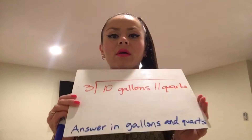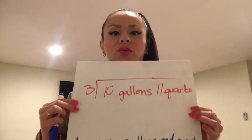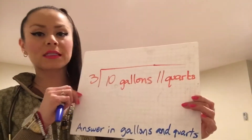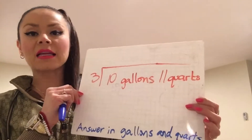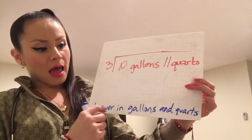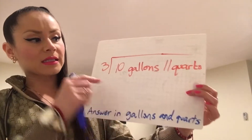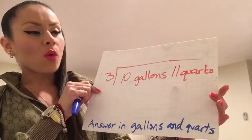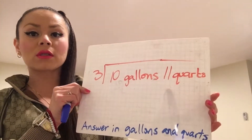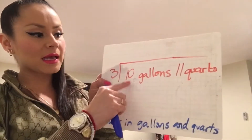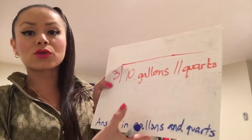Hey everyone, part two on our math problems where we need to convert units. This problem says 3 divided by 10 gallons and 11 quarts, and they also want the answer in gallons and quarts. Just in case you do not know, one gallon equals four quarts, so we must convert the 10 gallons into quarts.